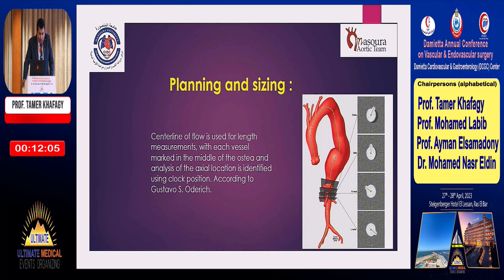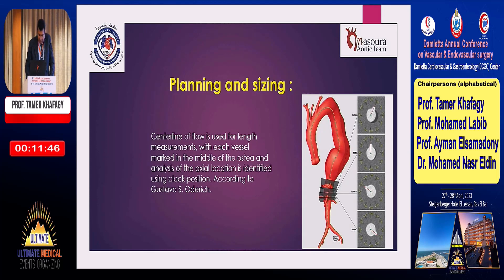Analysis of the axial location is identified using clock position, so we use the central lines for length, the central point of the vessel to mark the vessel, and clock position to mark the angle of the vessel. The measurement of the arc length is made from 12 o'clock to the center of the vessel on the aorta. If the graft is larger than the aortic segment, we use the inner vessel diameter.